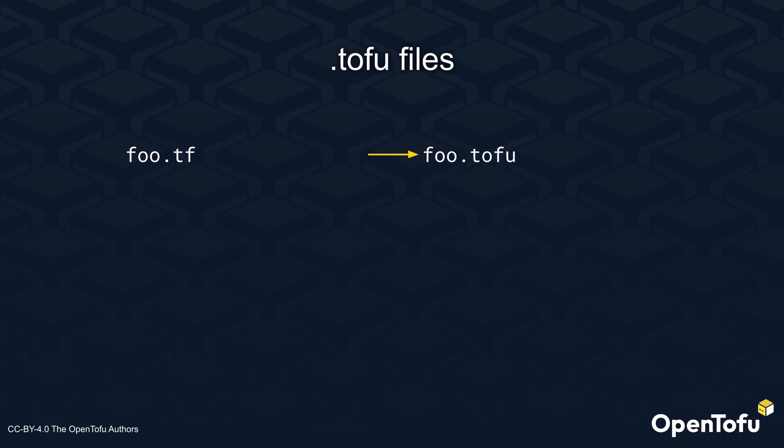Tofu files allow you to completely replace a file ending with .tf with its counterpart ending in .tofu. If you have a file called foo.tf and a file called foo.tofu, OpenTofu will completely ignore the foo.tf file. It is worth noting that this is different from override files, which let you override individual resources — .tofu files will replace .tf files in their entirety.